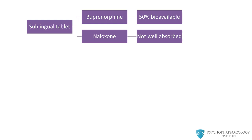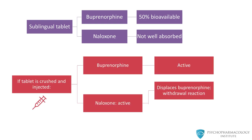When taken sublingually, buprenorphine is well absorbed, but naloxone is not well absorbed at all. Therefore, the net effect is that you get the effect of buprenorphine, but naloxone is not active. However, if the product is crushed and injected, then both buprenorphine and naloxone are active. The naloxone will displace the buprenorphine, producing a short-lived, maybe 60 to 90 minutes of an uncomfortable withdrawal reaction.